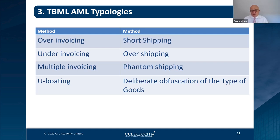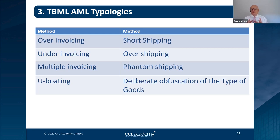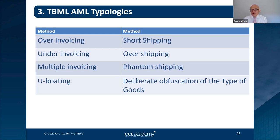Common TBML methods usually involve a transfer of value. Under- and over-invoicing means invoicing more or less than goods are actually worth. Linked to that is short or over-shipping — shipping less or more than declared on documents. Multiple invoicing involves the same goods being invoiced over and over; watch for repeating invoice numbers. U-boating involves purchasing genuine goods from a legitimate company, substituting counterfeit goods, and sending them back as returns — retaining the originals to sell, while an accomplice sells the counterfeits. Customs rarely open returns.